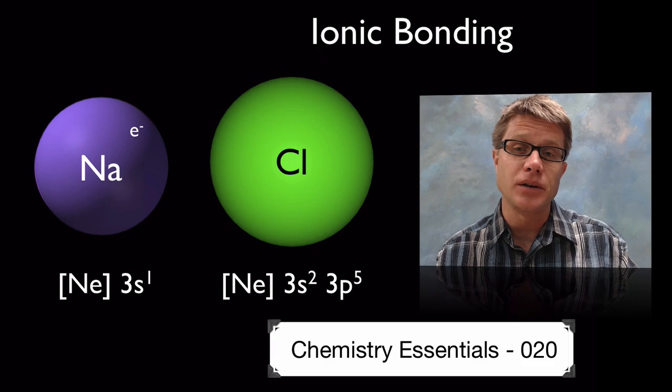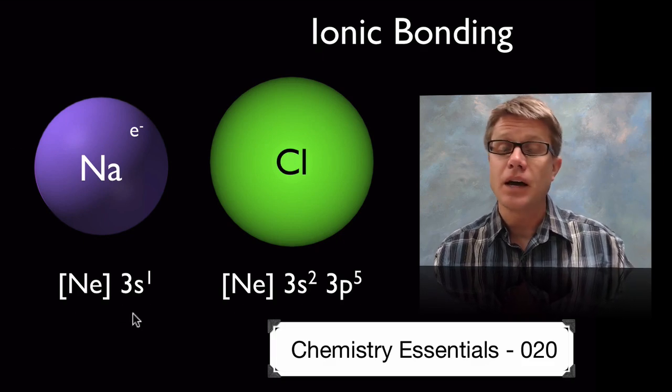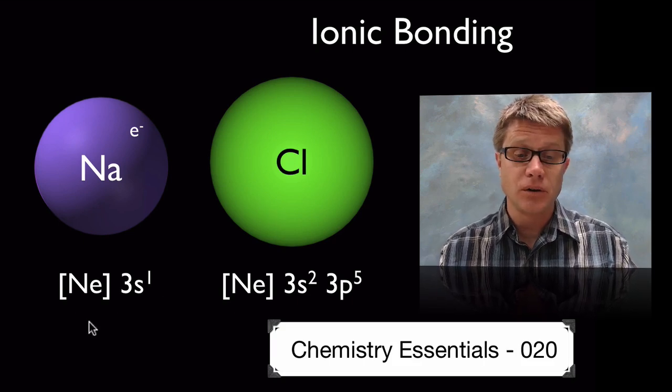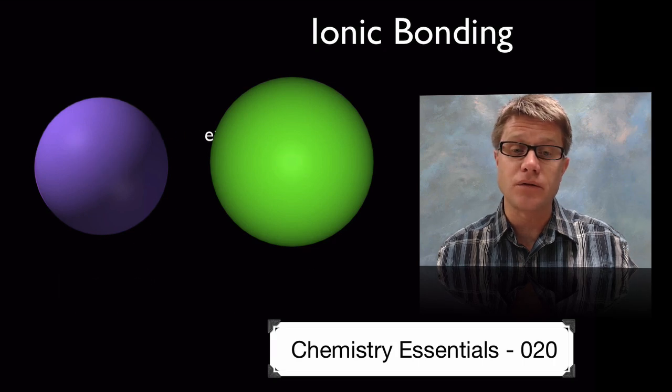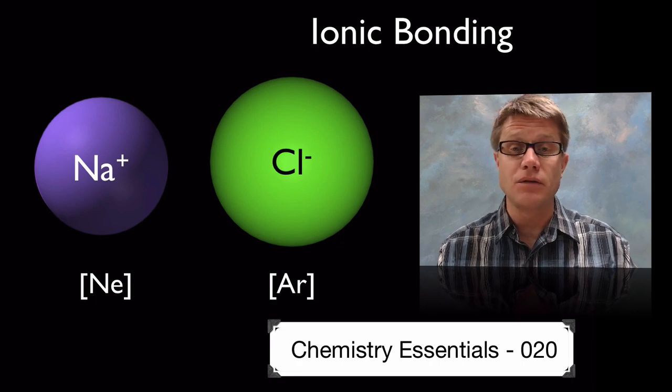The quintessential example is sodium chloride. Sodium, here's its electron configuration, has one valence electron. And chlorine is going to have seven. If we look at their electron configuration, if we can actually transfer that electron from sodium to chlorine, then we get to this electron configuration that is a noble gas. It's going to be very stable.